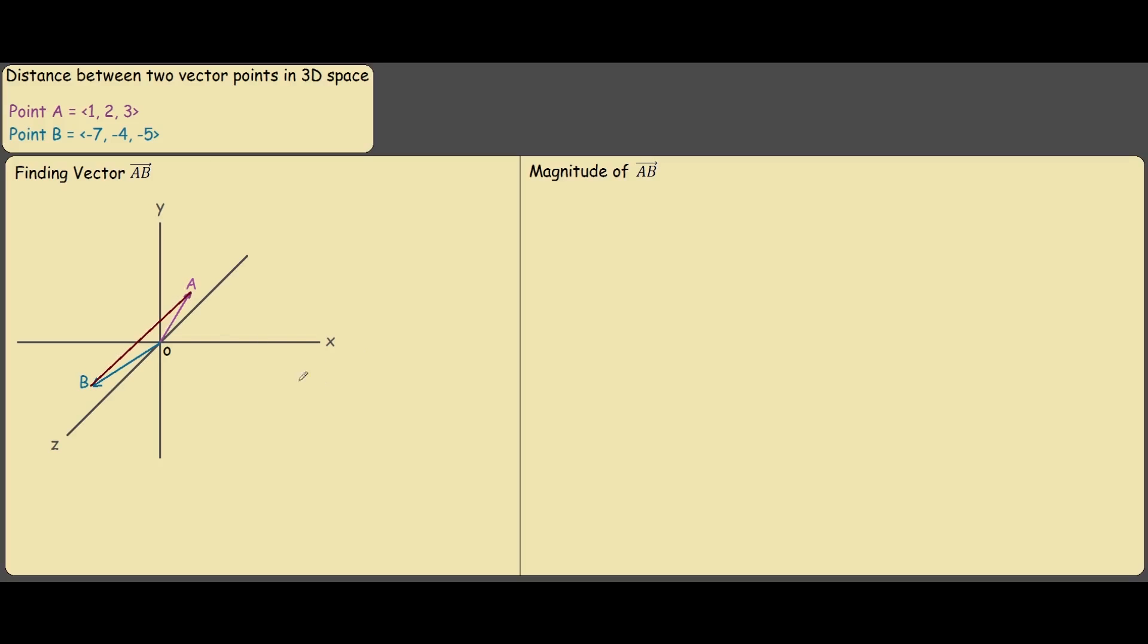So from our graph we can see that AB equals to AO plus OB.